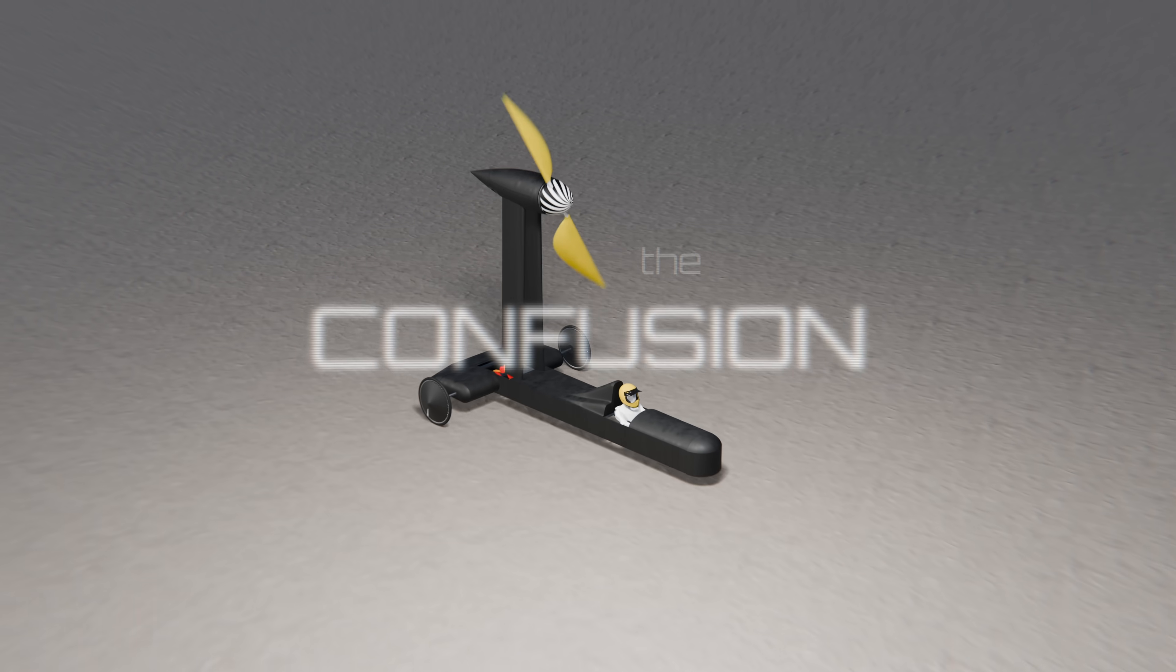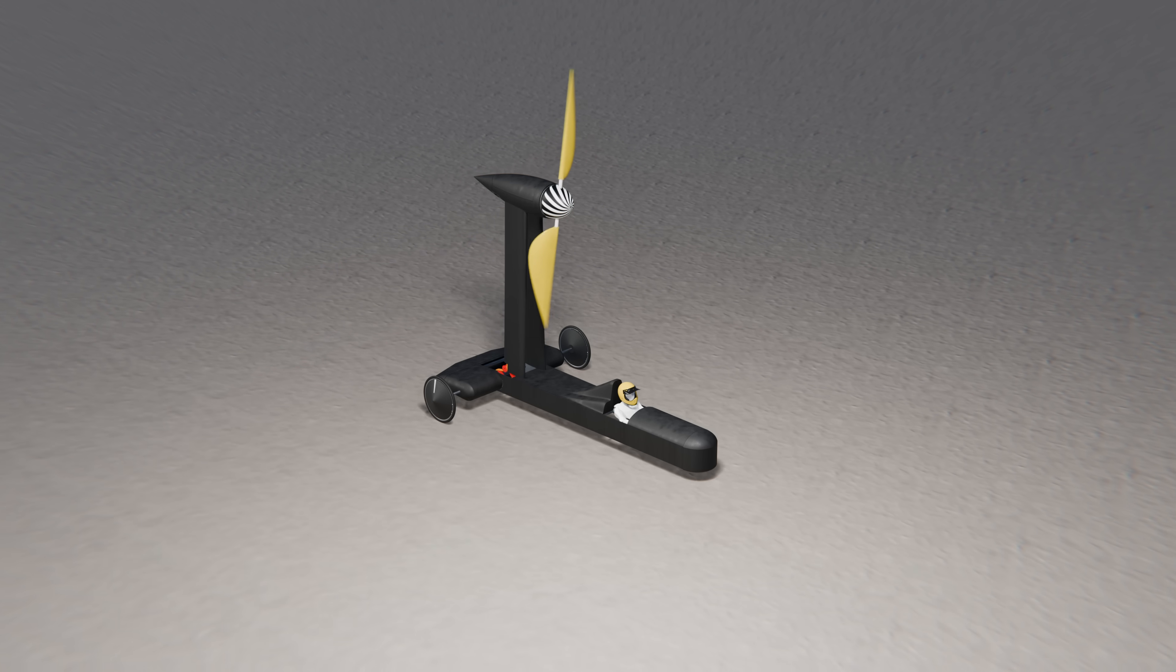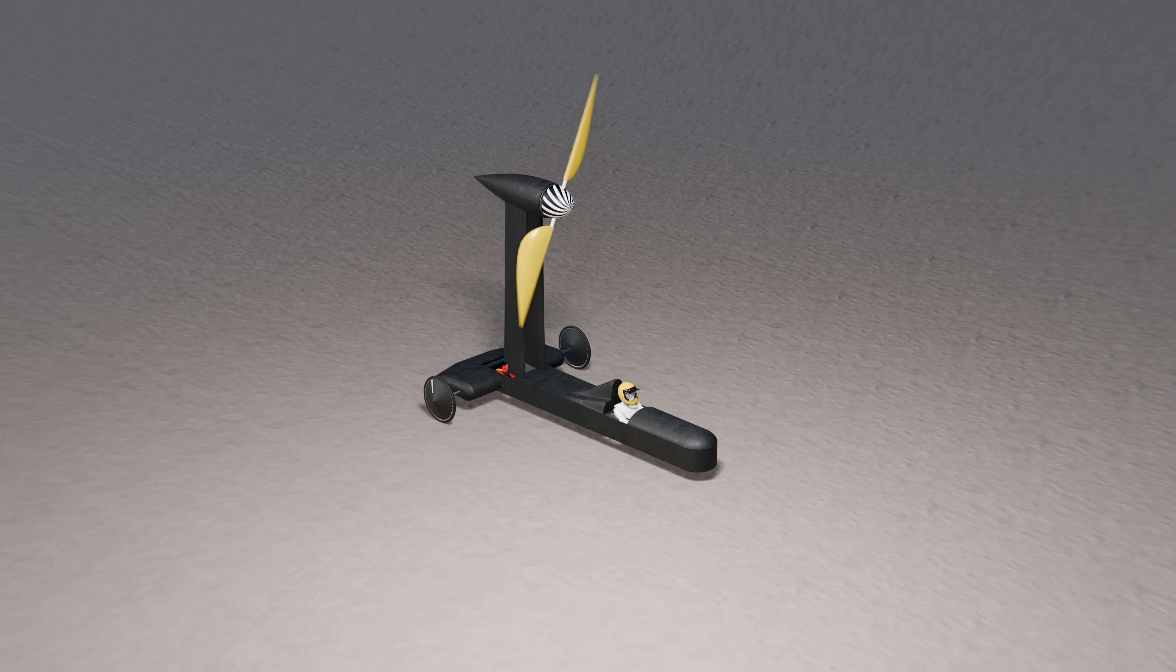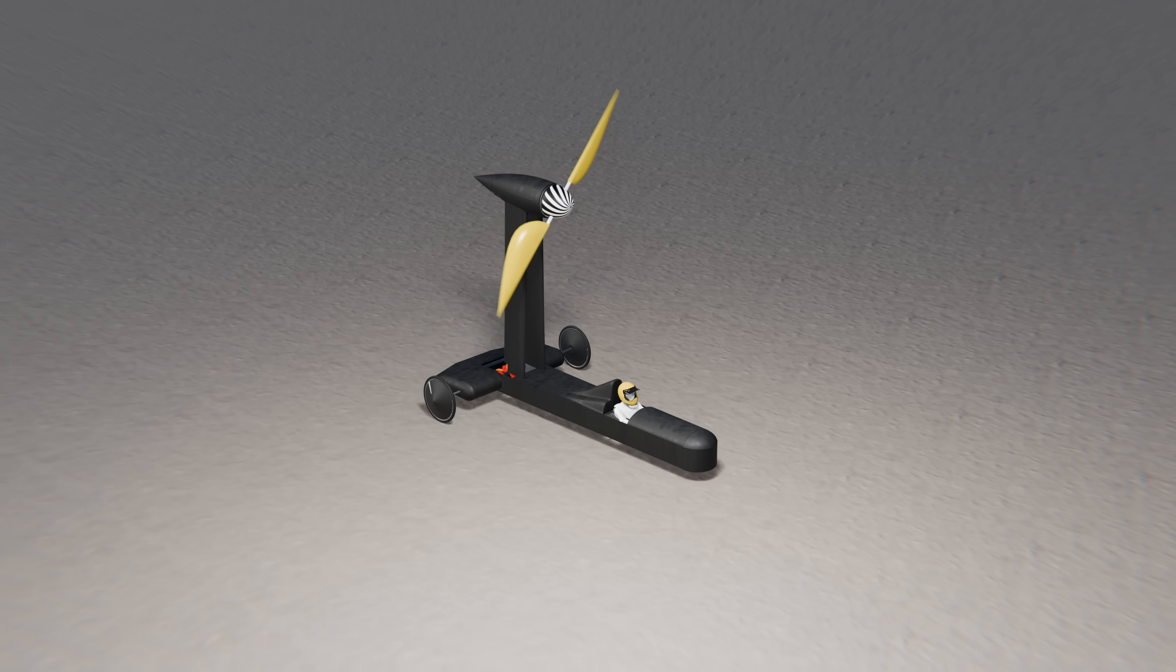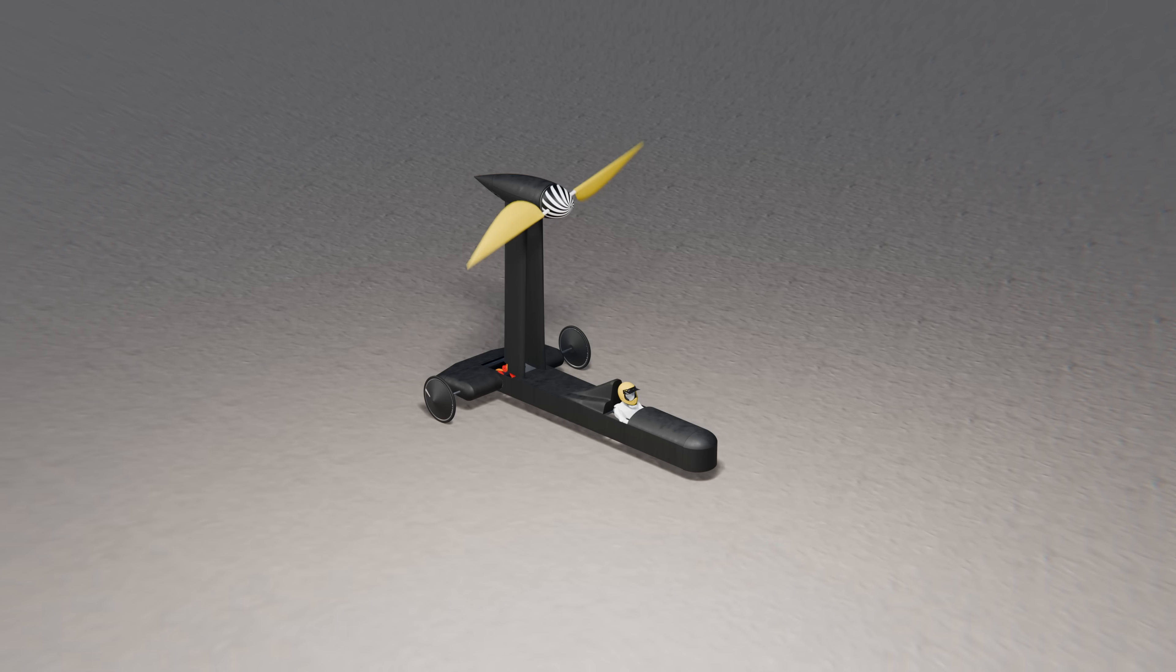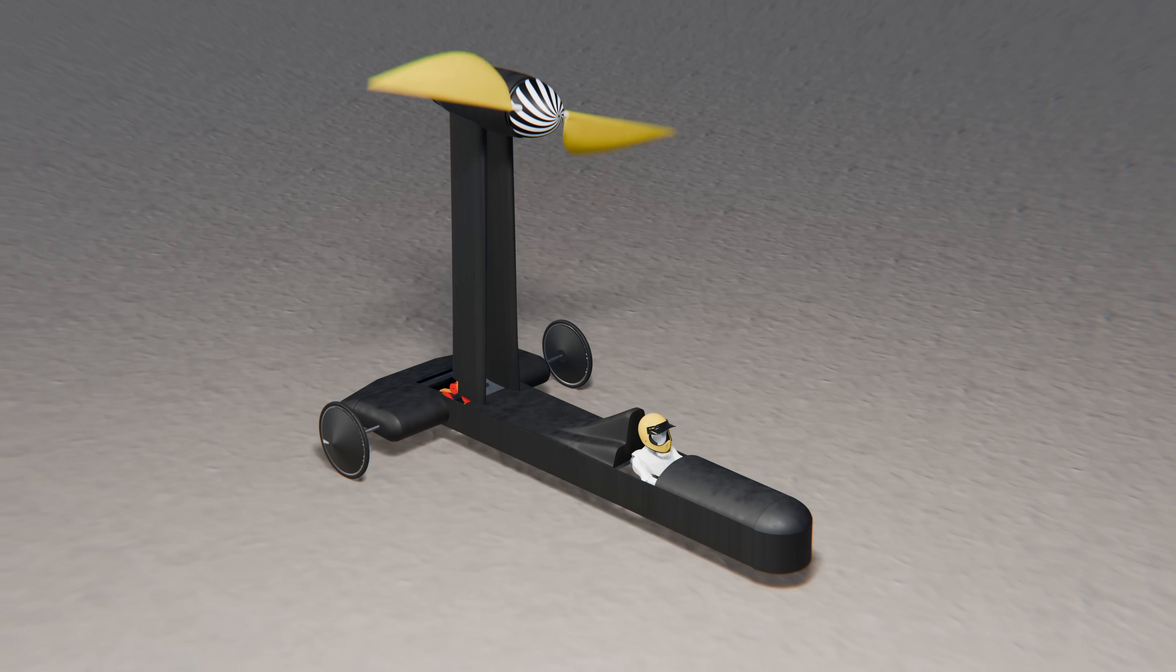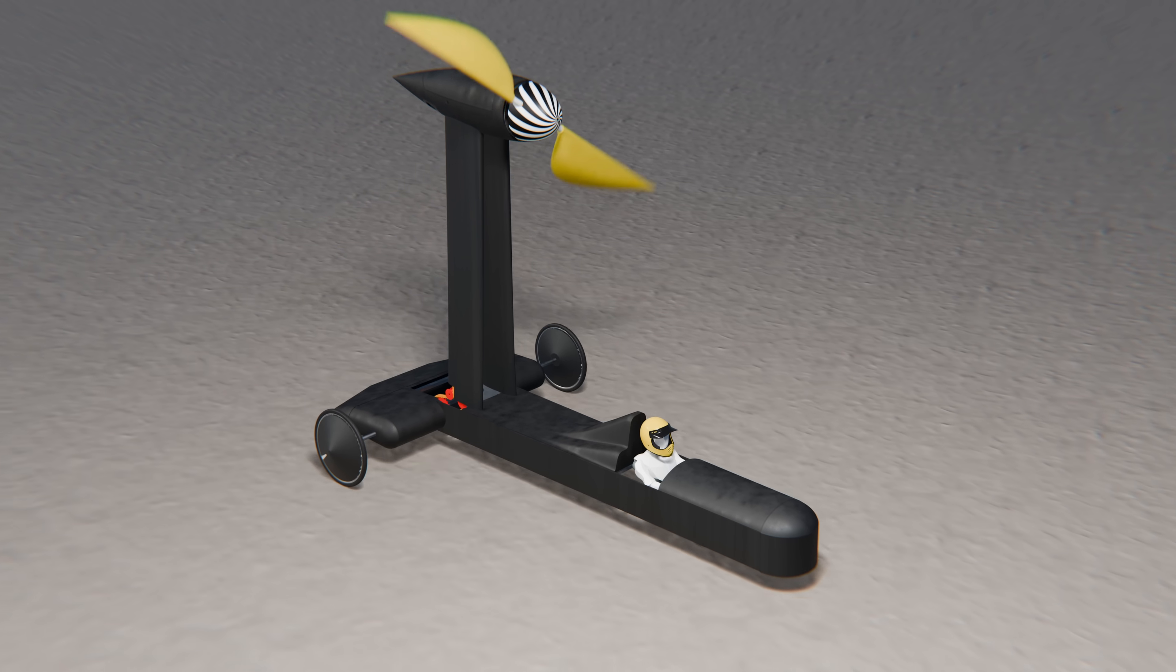People get confused by the Blackbird because it seems to break common-sense physics. The idea that a wind-powered vehicle can go faster than the wind itself feels like a violation of energy conservation, almost like perpetual motion, and that's where the skepticism starts. The confusion mainly stems from mixing up frames of reference.